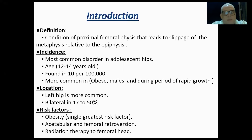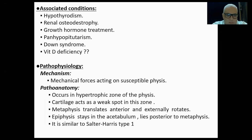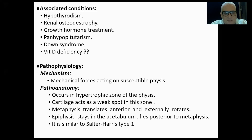Our risk factors: obesity is a very great risk factor, especially in our country. We also have acetabular and femoral retroversion, and radiation therapy. Several conditions can lead to this slip at an early age, like hypothyroidism, renal osteodystrophy, growth hormone treatment, pan-hypopituitarism, and Down syndrome. Some authors raise the possibility that it involves vitamin D deficiency, since measurement of vitamin D yielded severe deficiency in these children, especially as they are obese and need greater quantities of vitamin D.